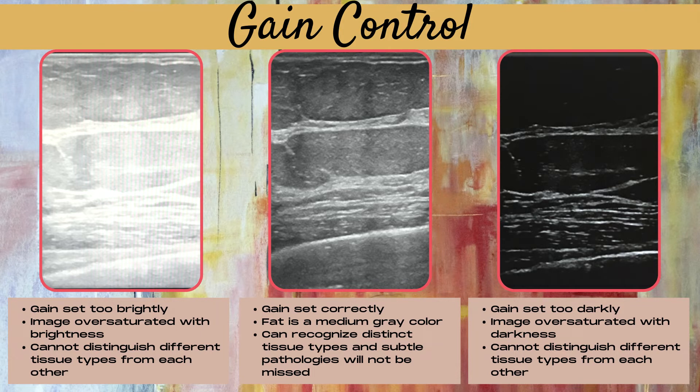On the image on the far right-hand side, the gain is set too darkly and the image is oversaturated with darkness, and you also cannot distinguish different tissue types from each other. In the middle image, the gain control is set correctly. The fat is set to a medium gray color, you can recognize distinct tissue types, and subtle pathologies are not going to be missed when the gain control is set correctly.